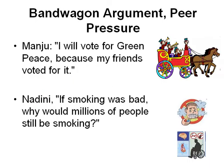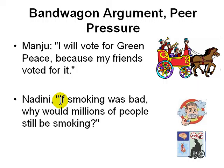Next is the bandwagon argument, or peer pressure. 'I will vote for the Green Party because my friends voted for it' — your friends are the bandwagon and you do whatever they do. It can also be applied negatively: 'If smoking was bad, why would millions of people still be doing it?' The bandwagon can be wrong, and you can't depend on the fact that millions of people are doing something to decide if it's right or wrong.